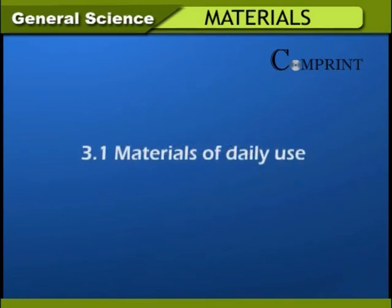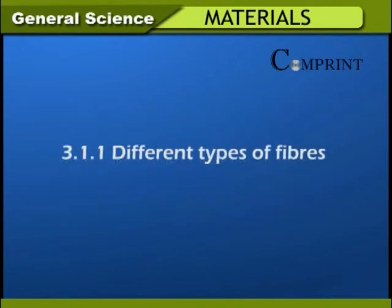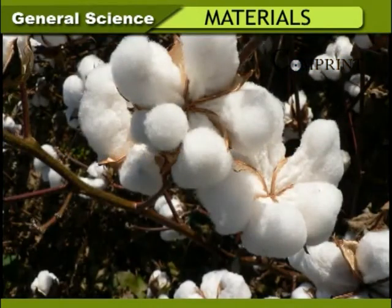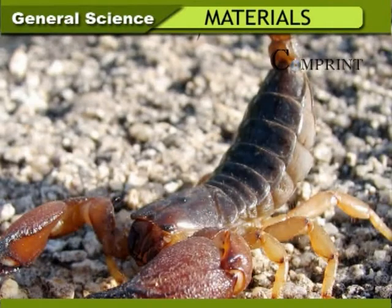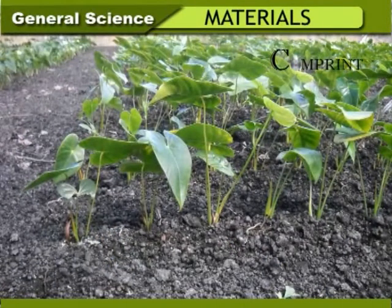Materials of daily use — we wear suitable clothes according to climatic conditions. We wear cotton clothes in summer and woolen clothes in winter to protect us from cold. Clothes like cotton, silk, wool, and jute are made up of natural fibers. Clothes like polyester, terylene, and acrylic are made up of synthetic fibers.